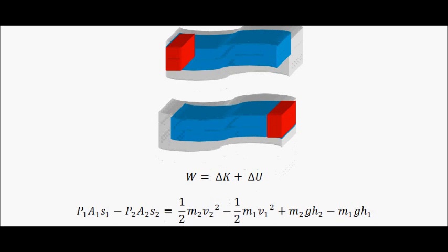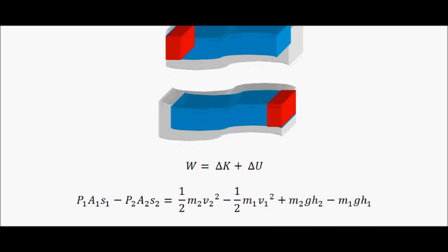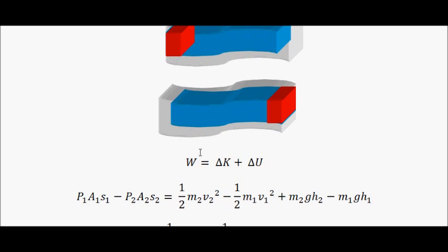I'm really going to use the work energy theorem here and see what comes out. If you know the Bernoulli equation, you'll know what we're actually looking for, but this is just a formal proof of what's going on. So the work here on this side is equal to the change of kinetic energy plus the change of potential energy.